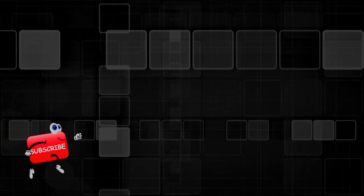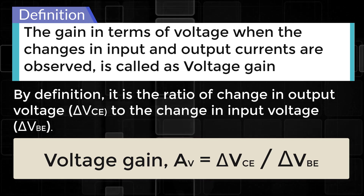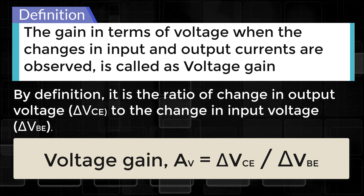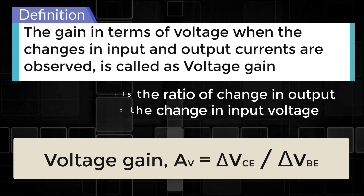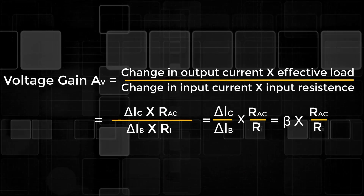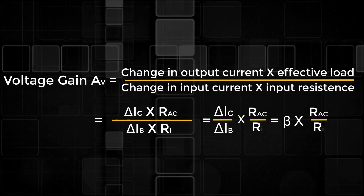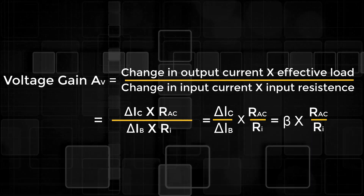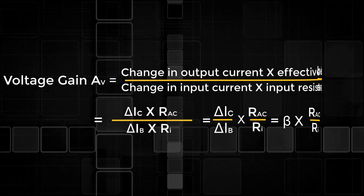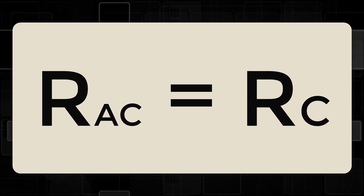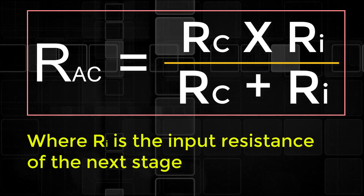Voltage gain: The gain in terms of voltage when the changes in input and output voltages are observed is called voltage gain. By definition, it is the ratio of change in output voltage ΔVCE to the change in input voltage ΔVBE. Voltage gain AV = (ΔIC × RAC) / (ΔIB × RI) = β × RAC / RI. For a single-stage amplifier, RAC = RC; however, for a multistage amplifier, RAC = RC × RI / (RC + RI), where RI is the input resistance of the next stage.